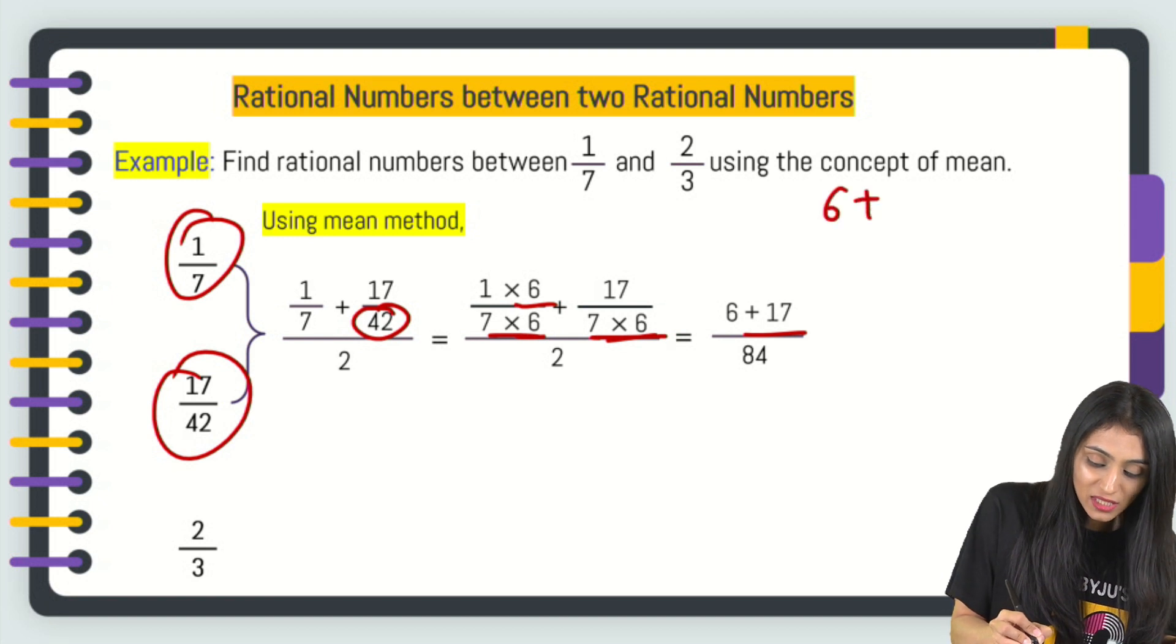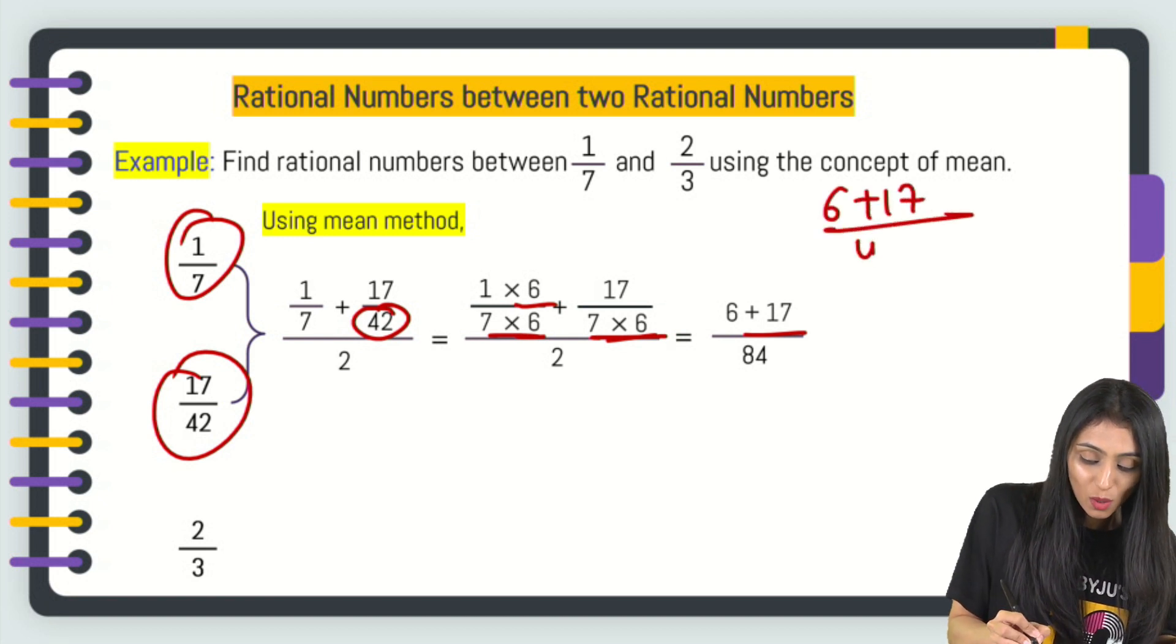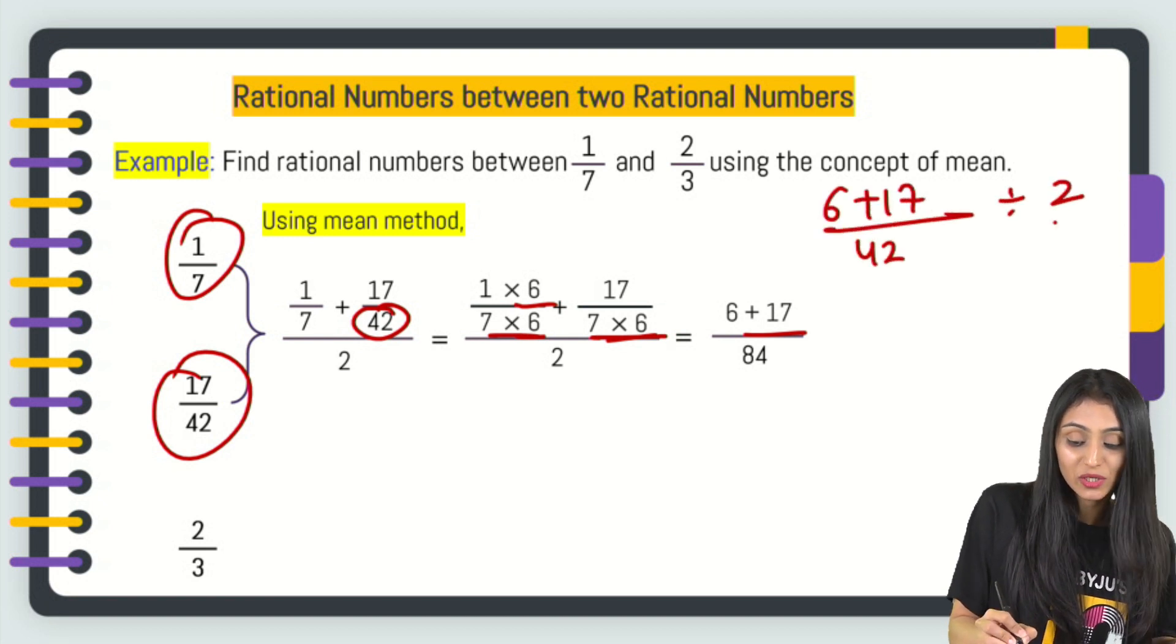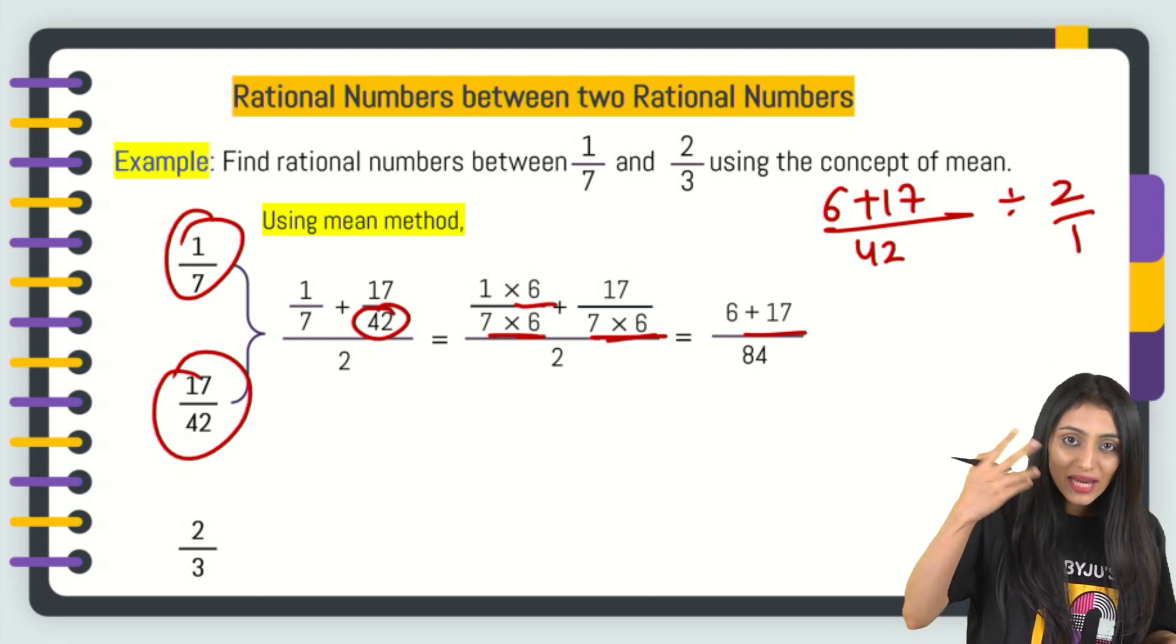6 plus 17. Let me just simplify this for you. 6 plus 17, denominator is 42. This is getting divided by 2, or you can say 2 by 1. Once you change,